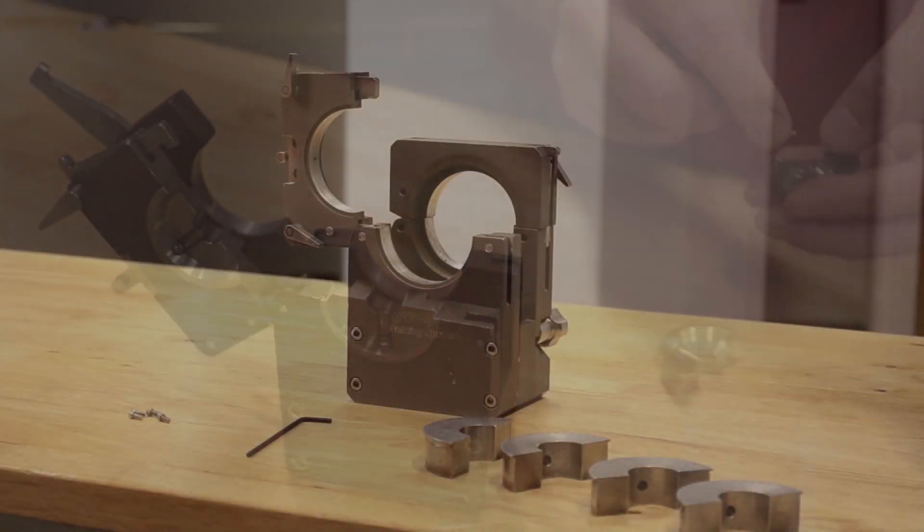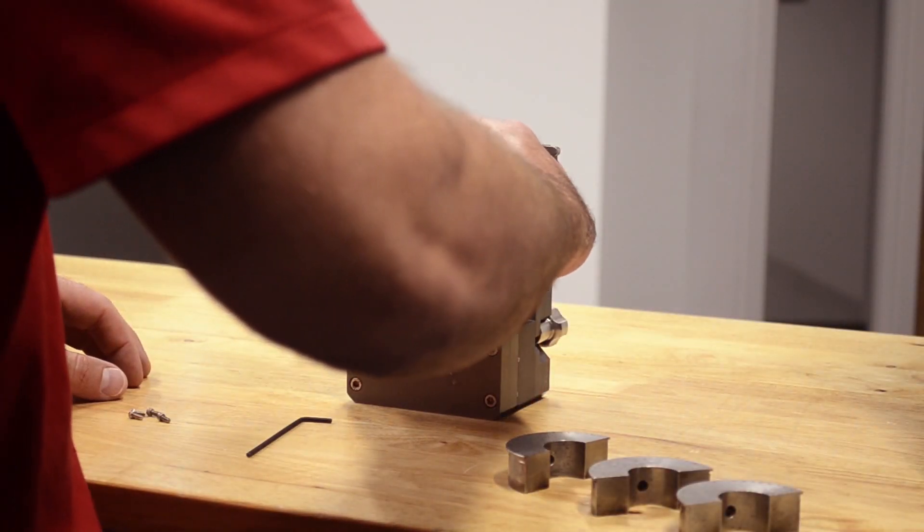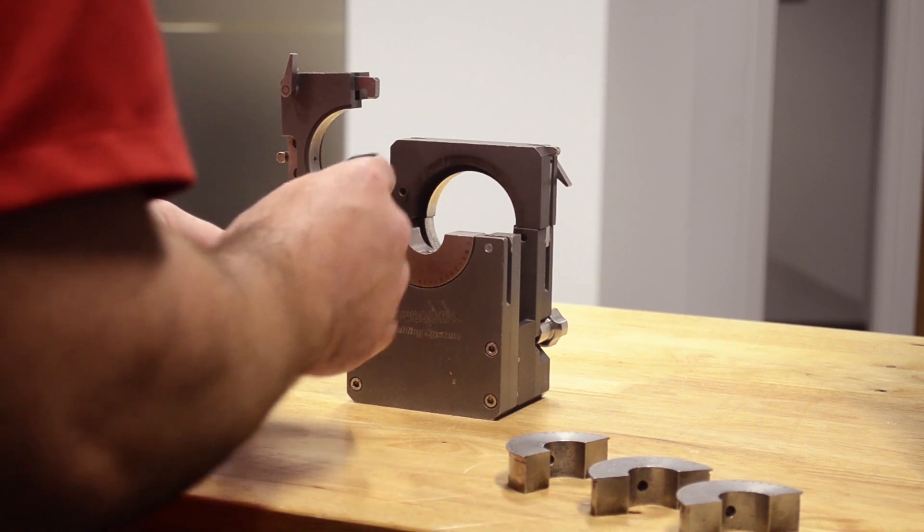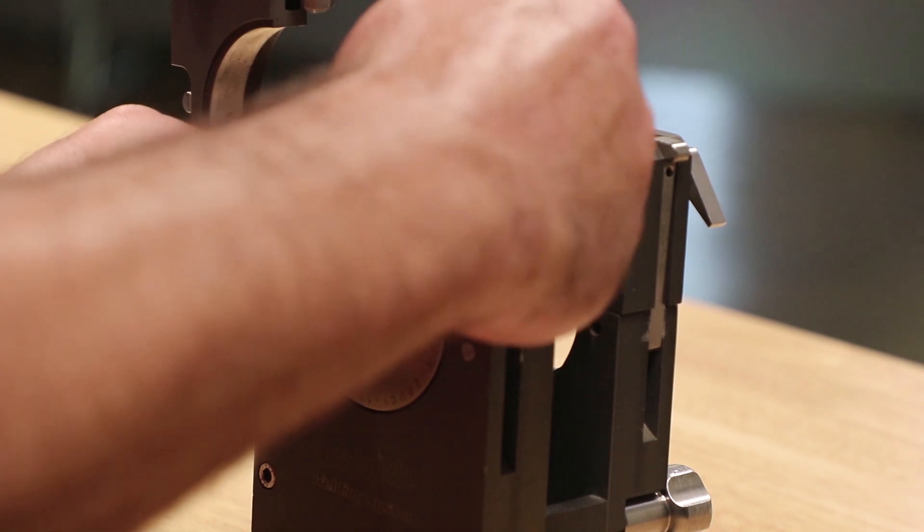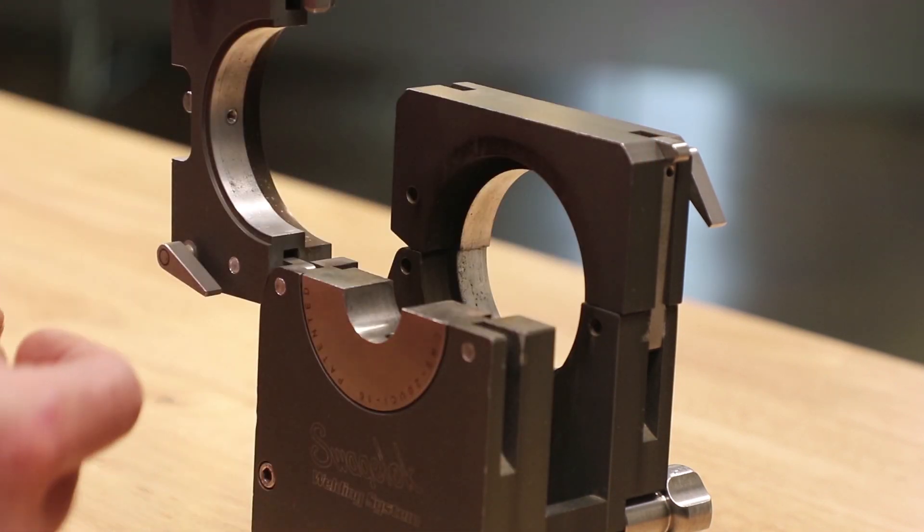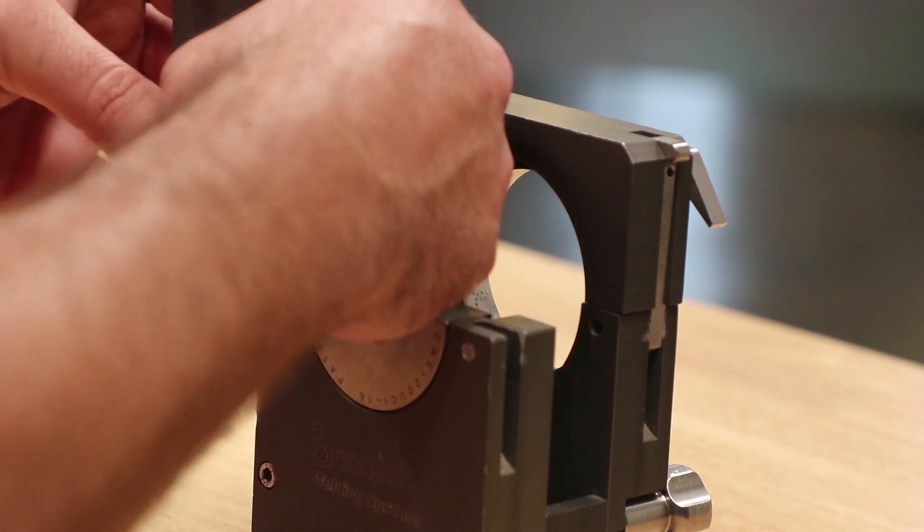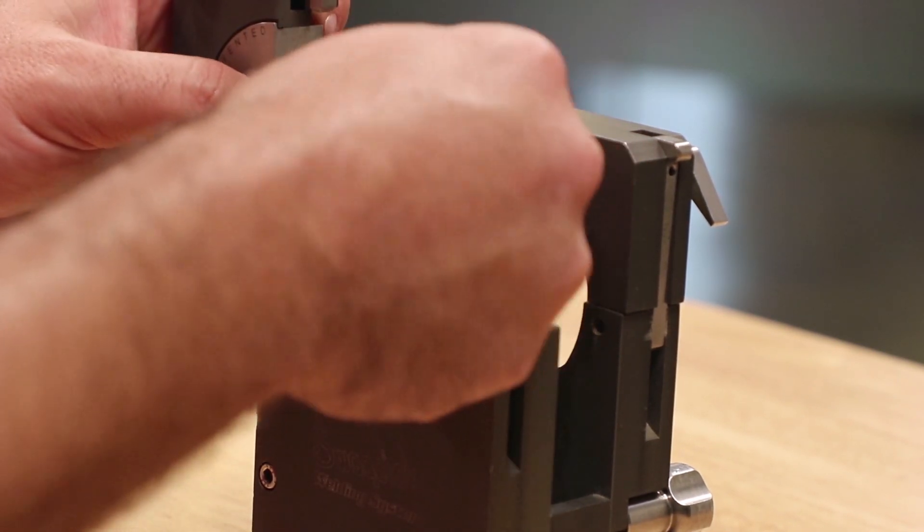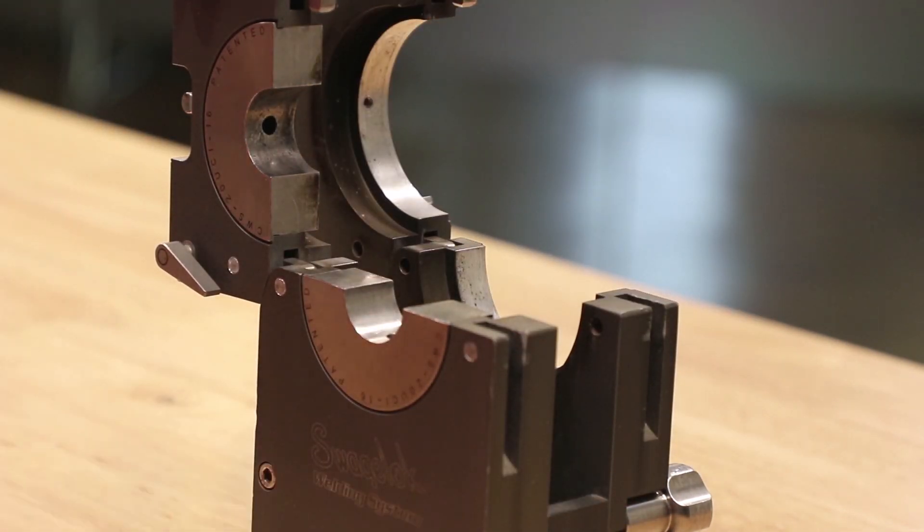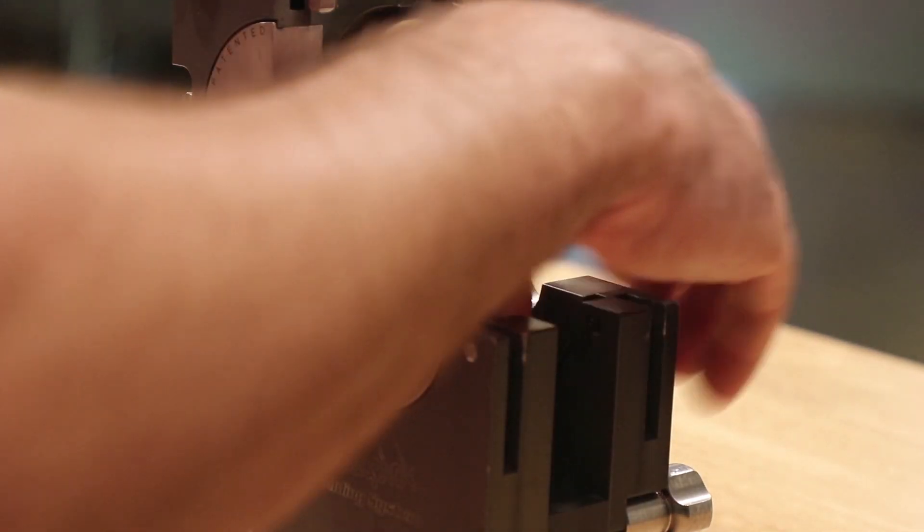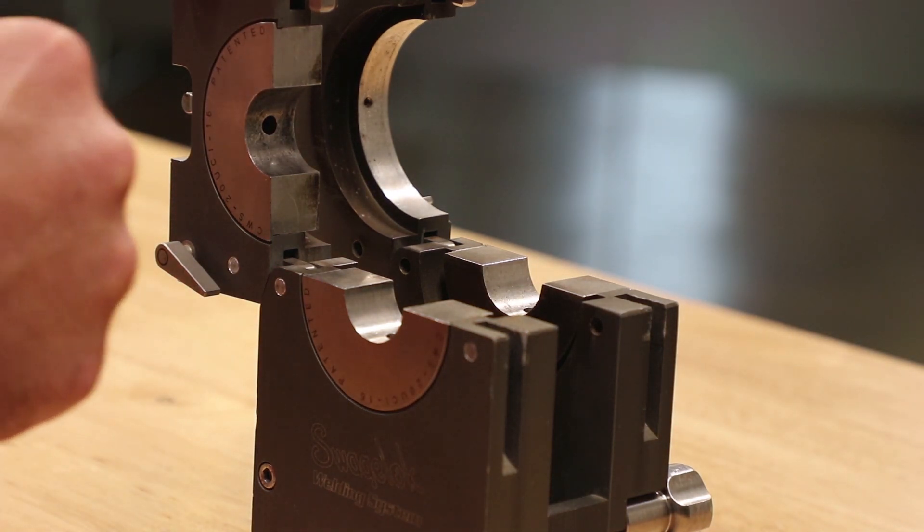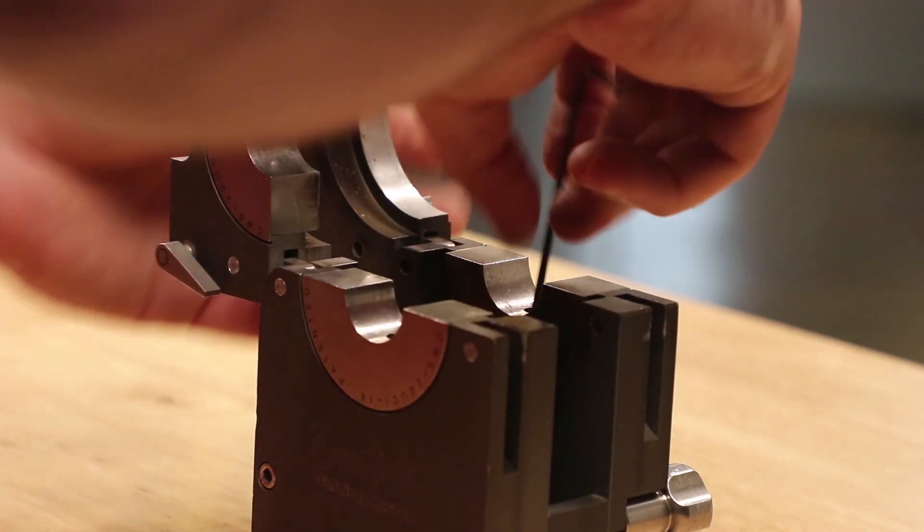Swagelok manufactures several different sizes of weld heads to accommodate material from sixteenth inch all the way up to four inch. To minimize the amount of components, we create collets for these weld heads and their associated fixture blocks. Switching a fixture block for the 20H weld head, which accommodates half inch to two inch tubing, is as simple as changing a few collets with a handful of screws. This allows one fixture block to handle tubing sizes from half inch to two inch.